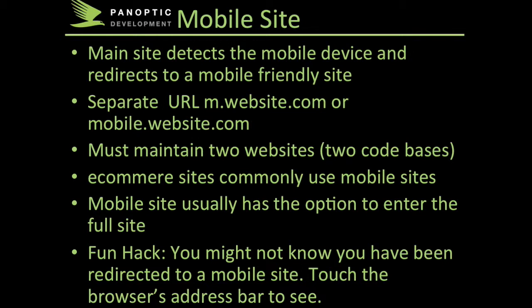From a development standpoint, you must maintain two separate code bases and two separate servers, so it is more expensive to have. Ecommerce sites commonly use mobile sites. Mobile sites do offer you the ability to go to the full version, so if you're used to shopping at llbean.com on your desktop and you just don't like the mobile version, you can go to the desktop version on your mobile phone. A fun little hack — you might not even know you've been redirected to a mobile site, so if you touch the address bar, you'll see m.llbean.com, and that's how you know that you've been redirected.